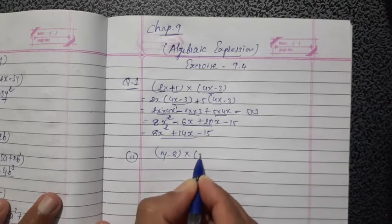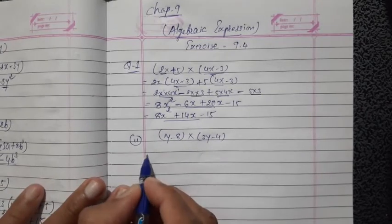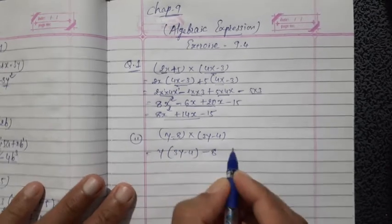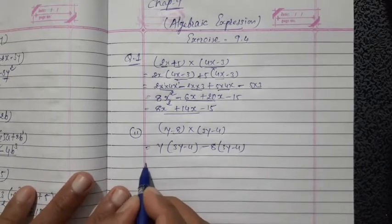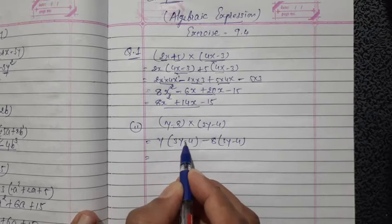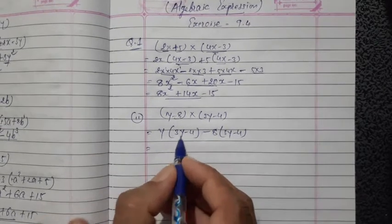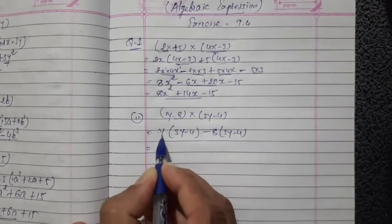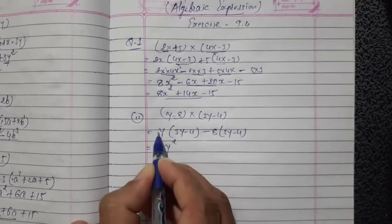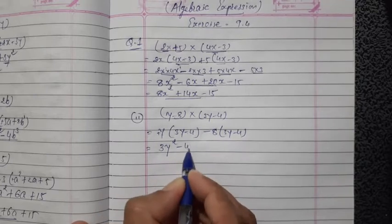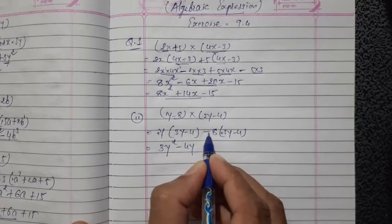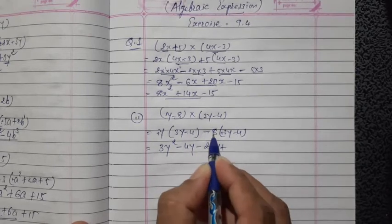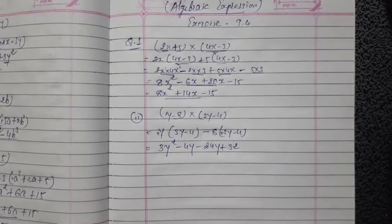Now the second one: (y - 8) into (3y - 4). Multiply y with both terms directly: y into 3y gives 3y squared, and minus 4 into y gives minus 4y. Then minus 8 into 3y gives minus 24y, and minus 8 into minus 4 gives plus 32.